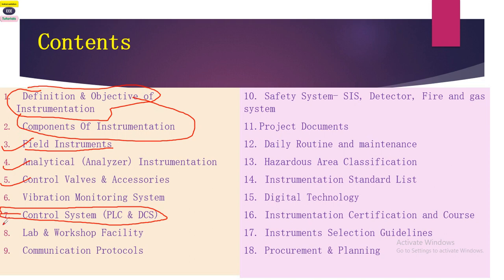The eighth point covers lab and workshop facilities, where calibration, instrument checking, and analyzer testing take place. This is where instruments can be troubleshot and verified for proper operation. Lab and workshop facilities are equally important to all the topics discussed so far.